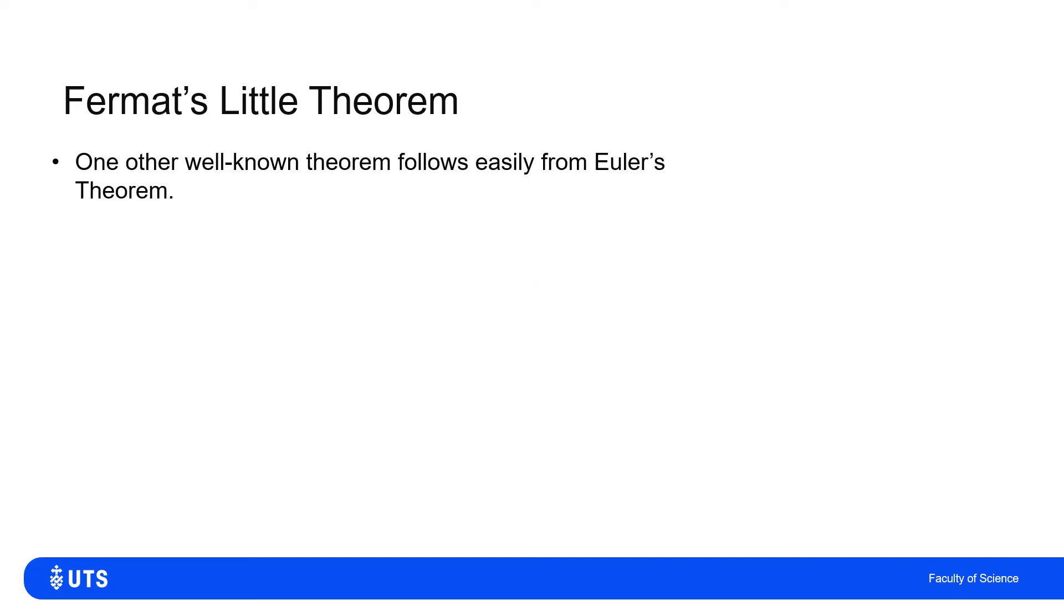There is a famous theorem, which is now often thought of as little more than a corollary of Euler's theorem. And this is Fermat's little theorem. It says if I've got a prime number p, and another integer a, which is coprime with p, then a to the power p minus 1 is equivalent to 1 mod p.